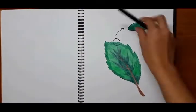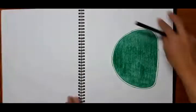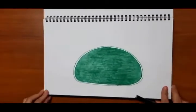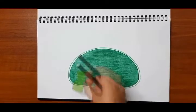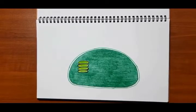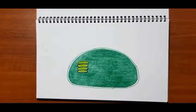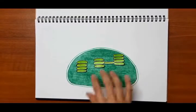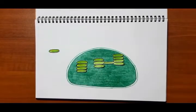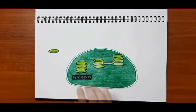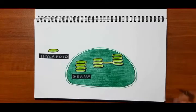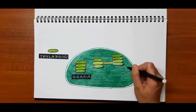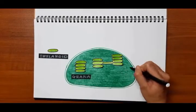This is the grana, and one unit of grana is called a thylakoid. The fluid that fills the space of the chloroplast is known as the stroma.